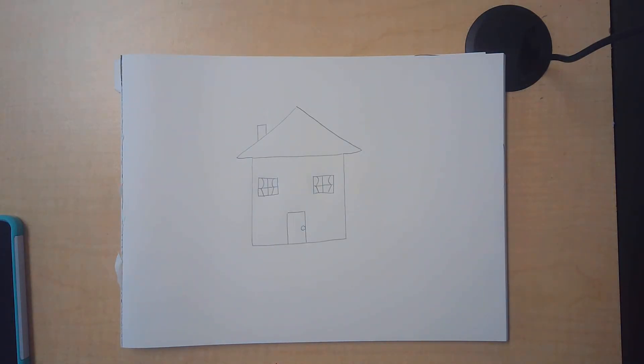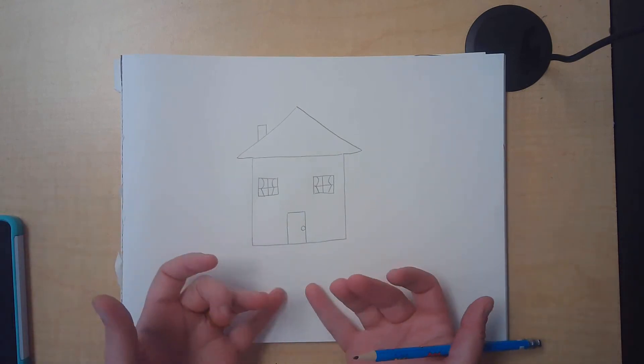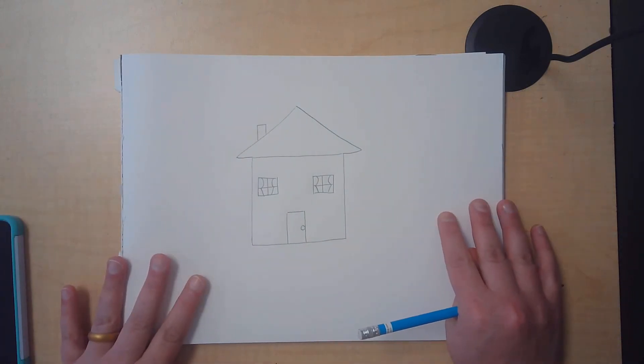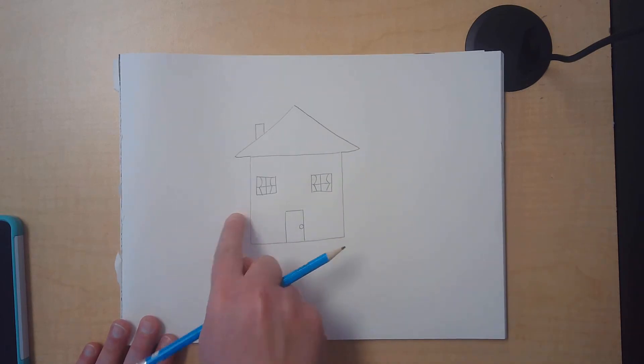Once we have our beautiful house, we need to create an area for our house to sit upon, because right now our house is floating as if by magic in the center of our page. And well, that just doesn't quite look very realistic. So we're going to be drawing a hill behind our house. Let me show you how.